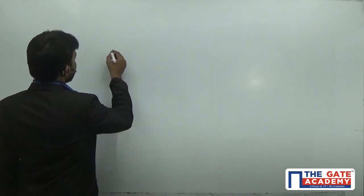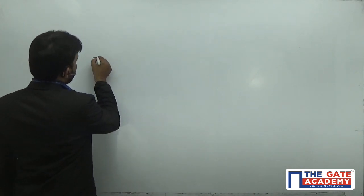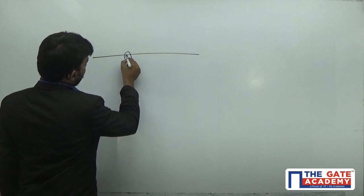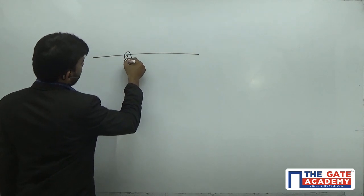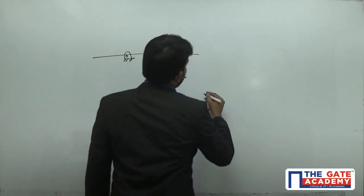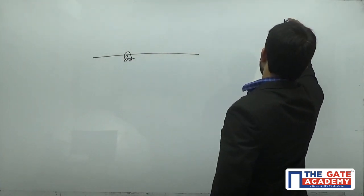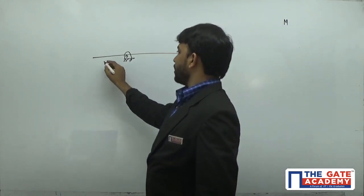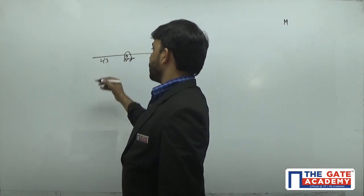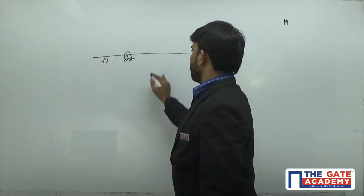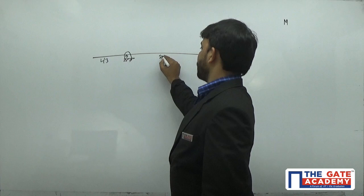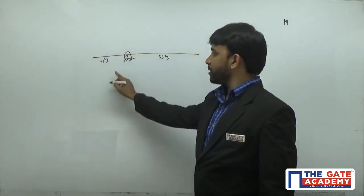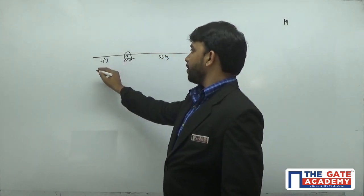Question number 14: there is a rod of mass capital M. This rod is hinged at a distance L/3 from one end, so the other side is 2L/3. The total length of the rod is L, and it is hinged at a distance L/3 from end A.